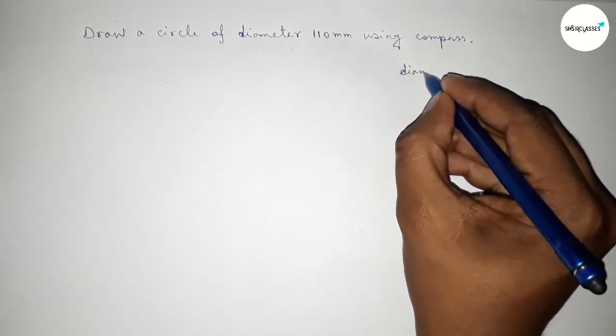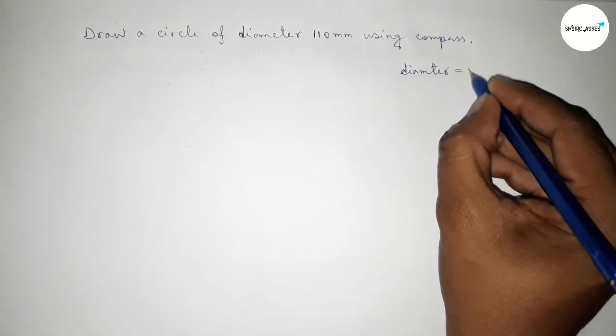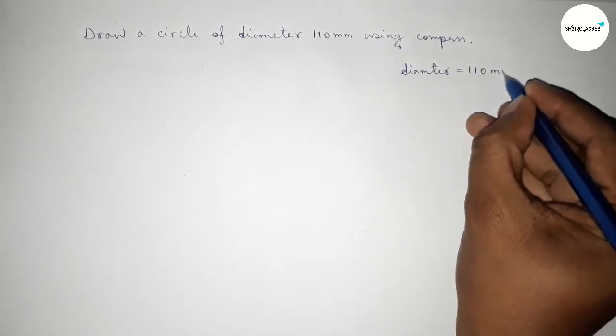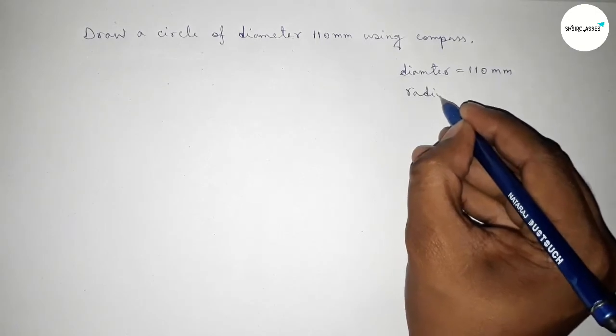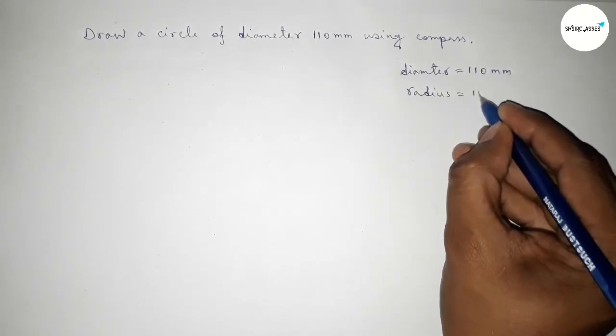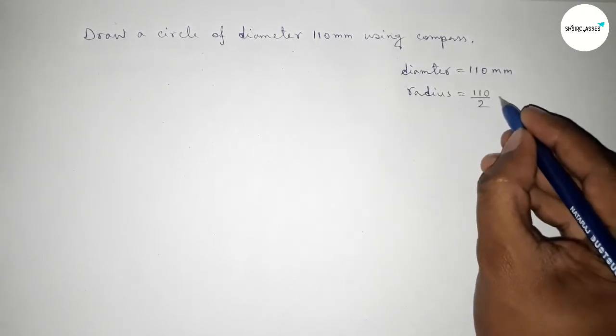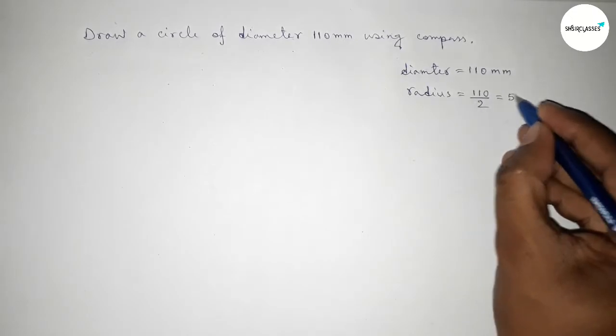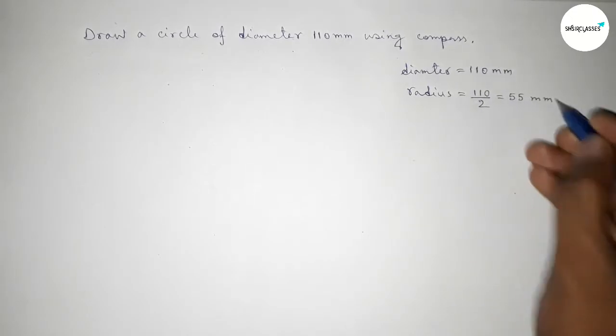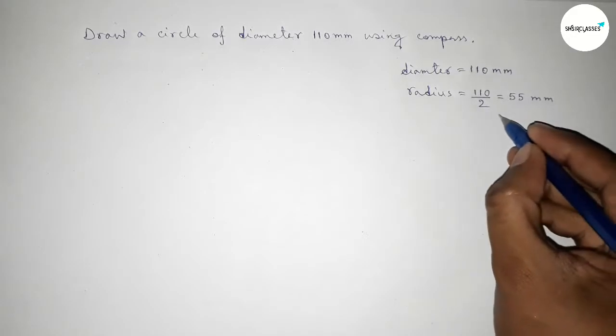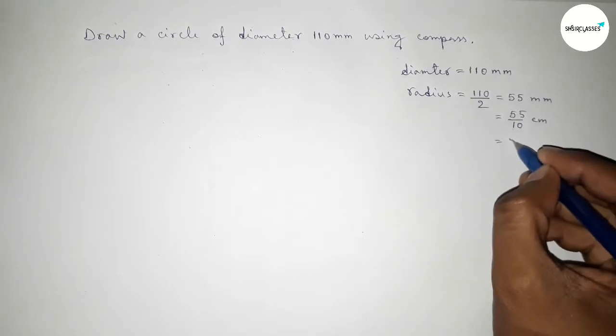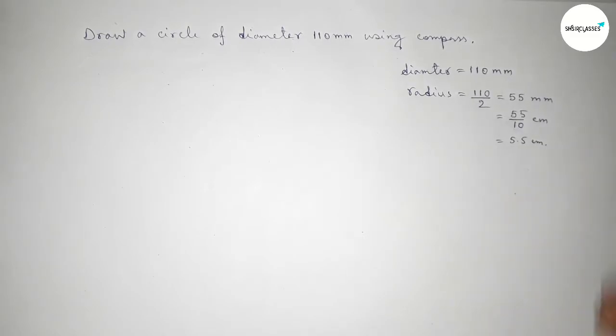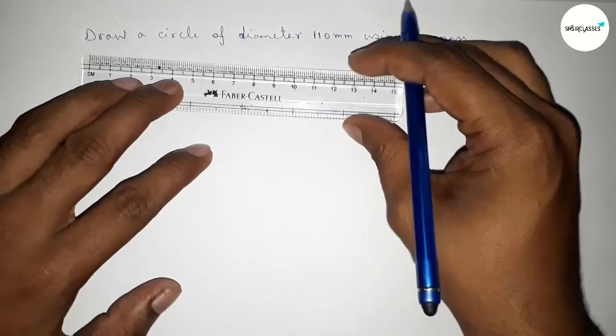Diameter equals 110 millimeter. Now finding the radius, so radius equals diameter divided by 2, which is 55 millimeter. Now converting millimeter into centimeter by dividing by 10, so this is 5.5 centimeter.